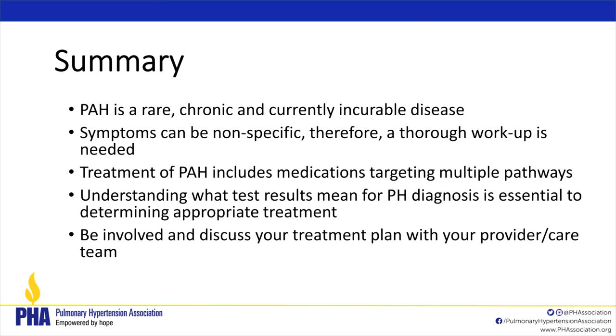In summary: PH is a rare, chronic, and currently incurable disease. The symptoms are non-specific, so a thorough workup is needed — cumbersome, but necessary to reach a diagnosis and start treatment. Treatment includes medications targeting multiple pathways. Understanding your test results is essential for determining your appropriate treatment plan. Be involved — discuss your treatment with your care team, and if you receive a test result you don't understand, please ask. We want you to be accountable, understand your condition, and be as successful as possible in your journey through PH.